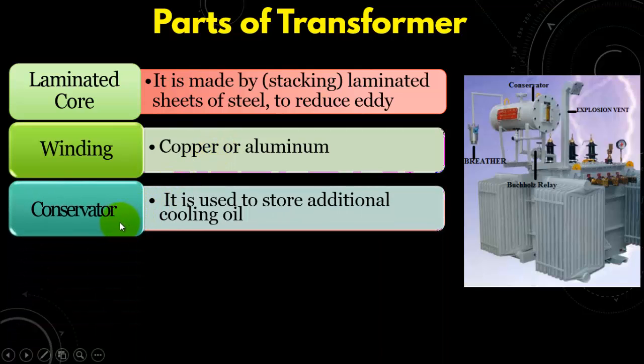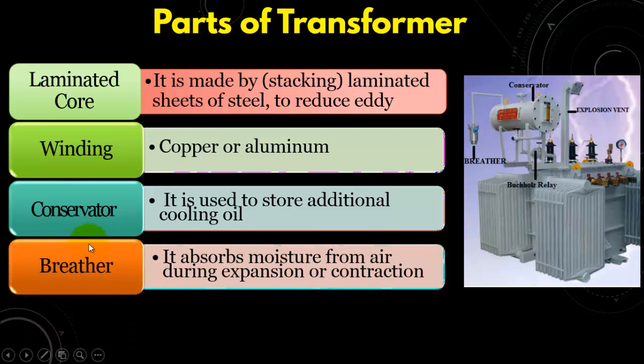The third is the conservator which is used to store the additional cooling oil. Nowadays, in a completely sealed transformer there is no conservator. Similarly, in sealed transformer there is no breather. But in the conventional transformers, the breather is used to absorb moisture from the air during expansion or the contraction of the oil.